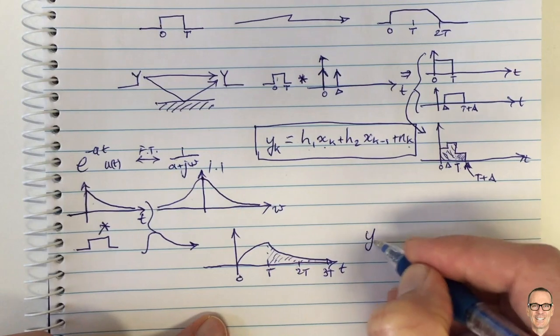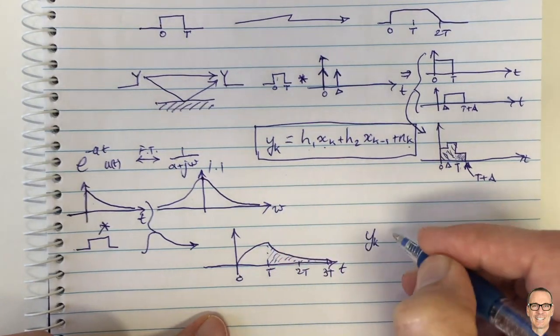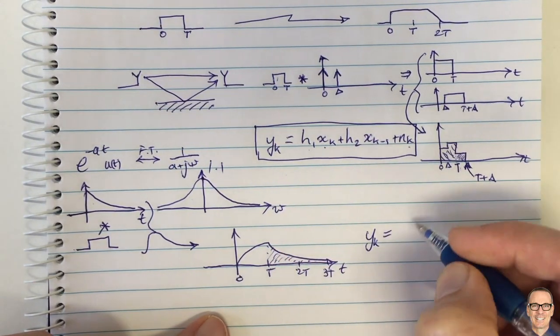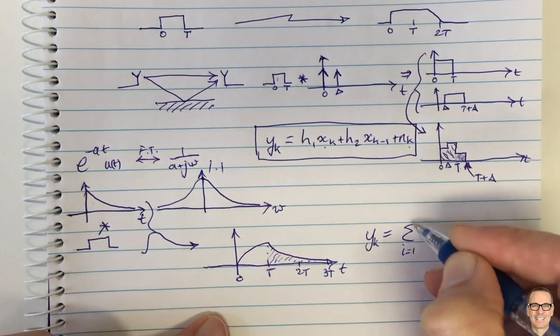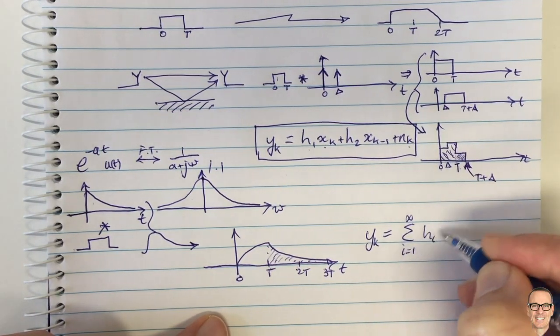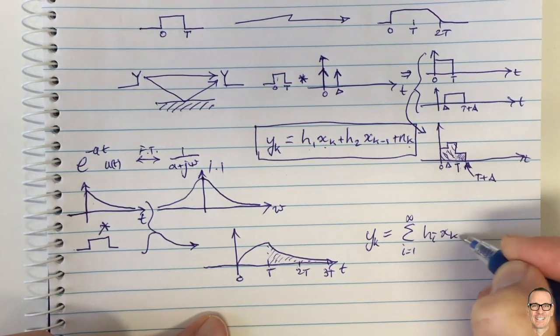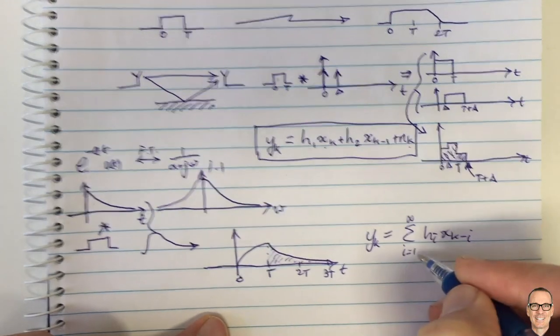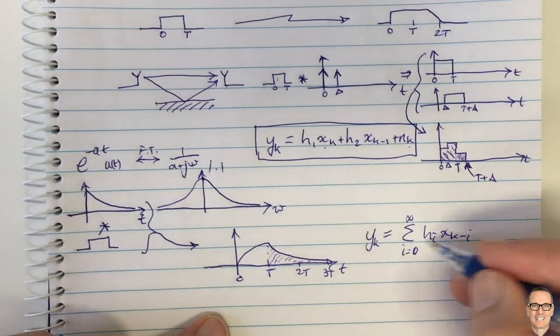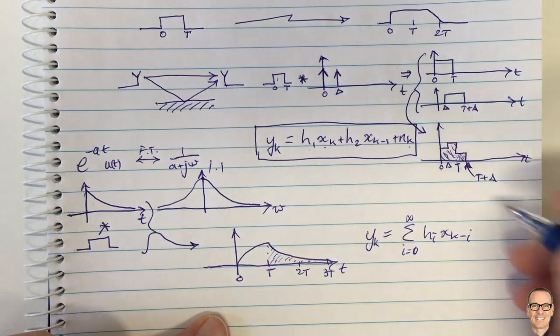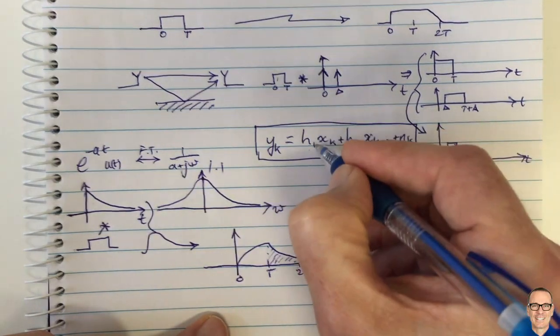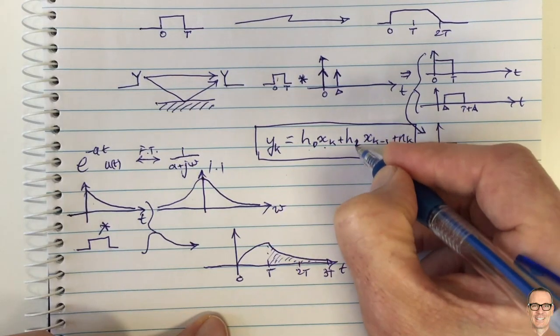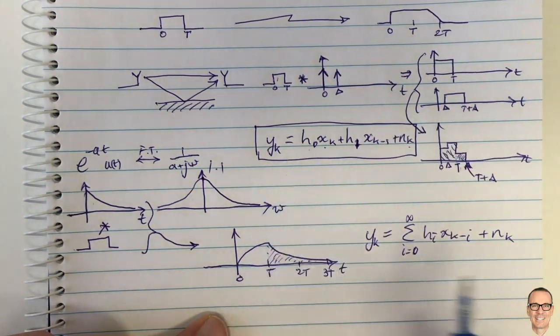Which equals the sum over i equals zero to infinity of hi times xk minus i—let's make that start at zero and we'll have that give us our direct line through plus noise. I might just go back and relabel that h0 and h1 for consistency with this equation.